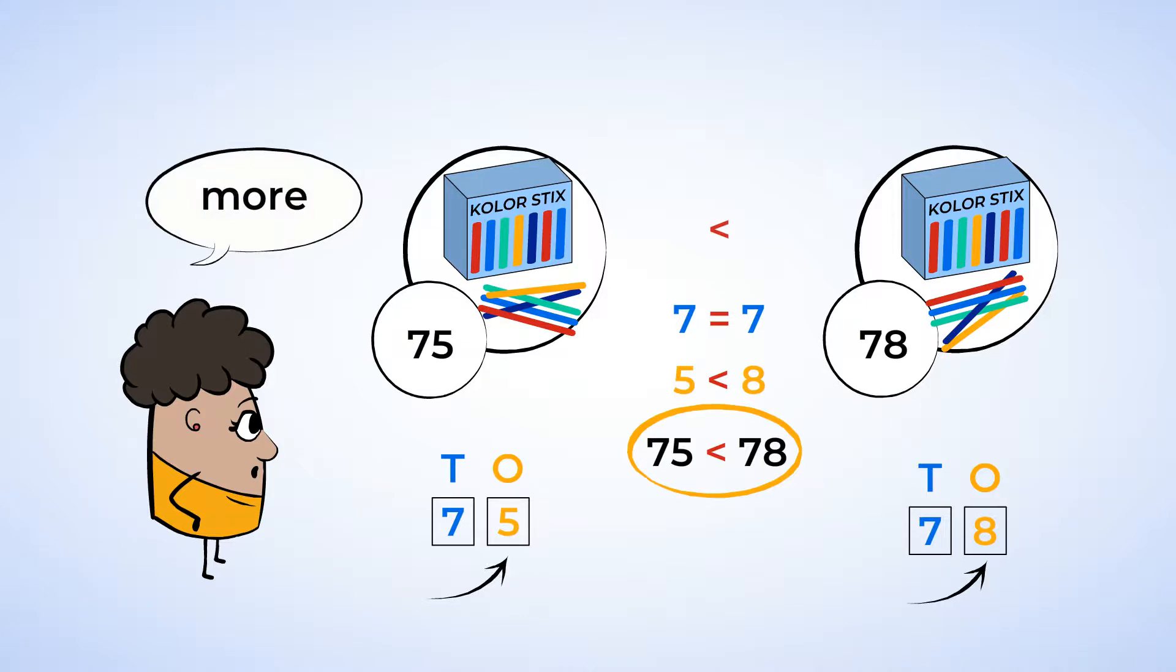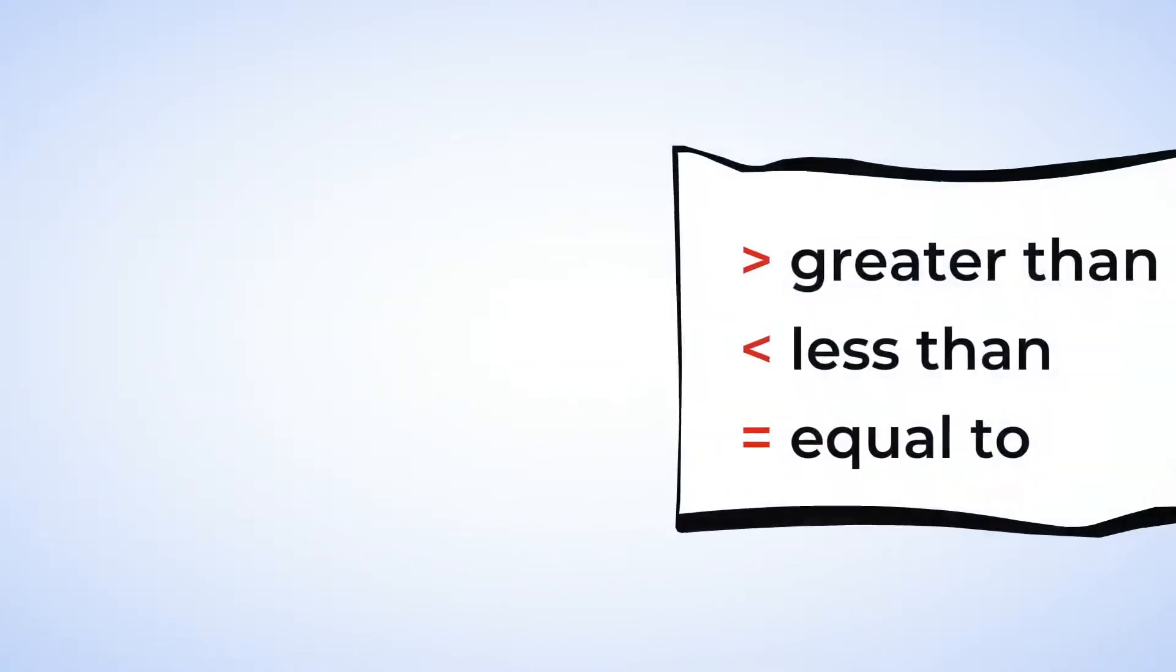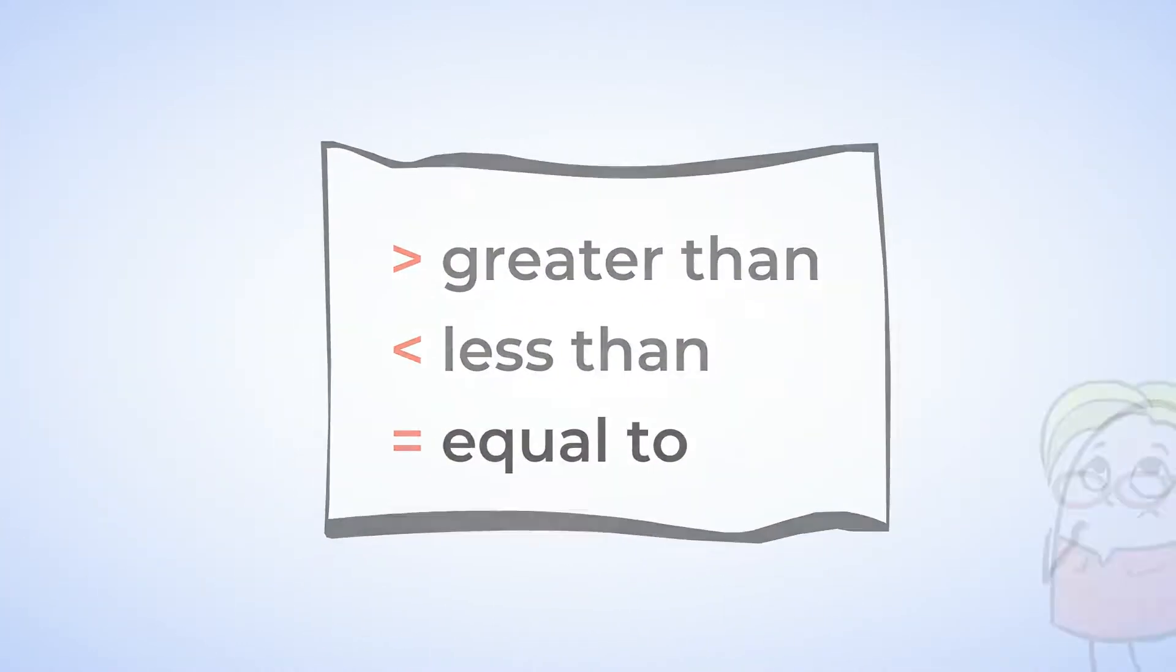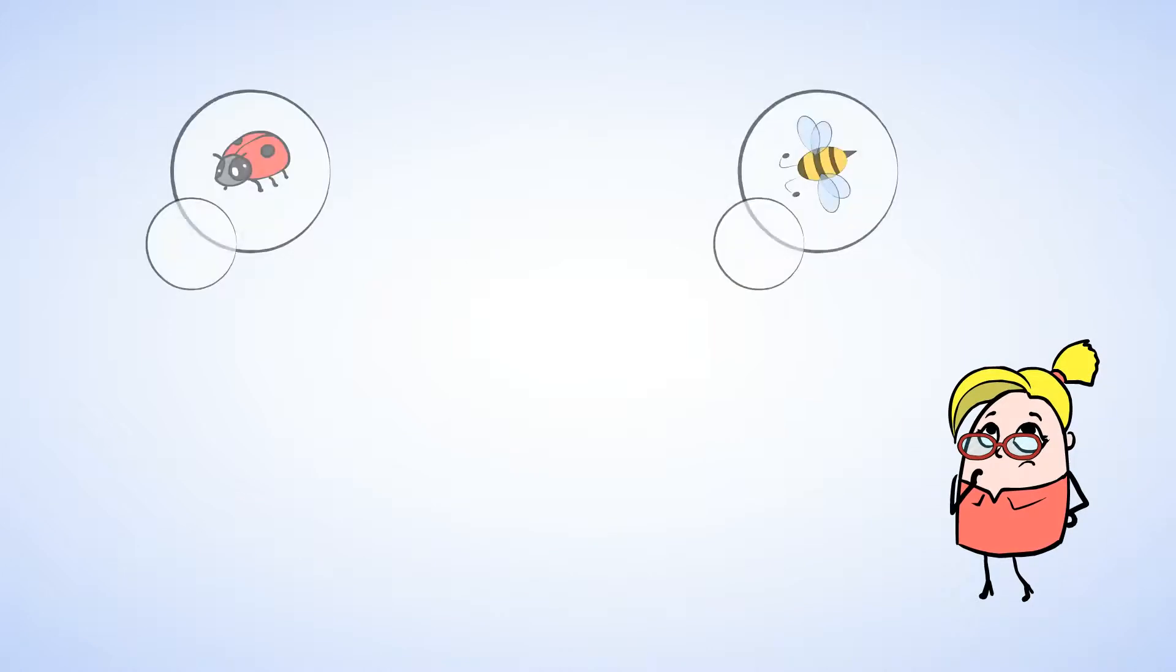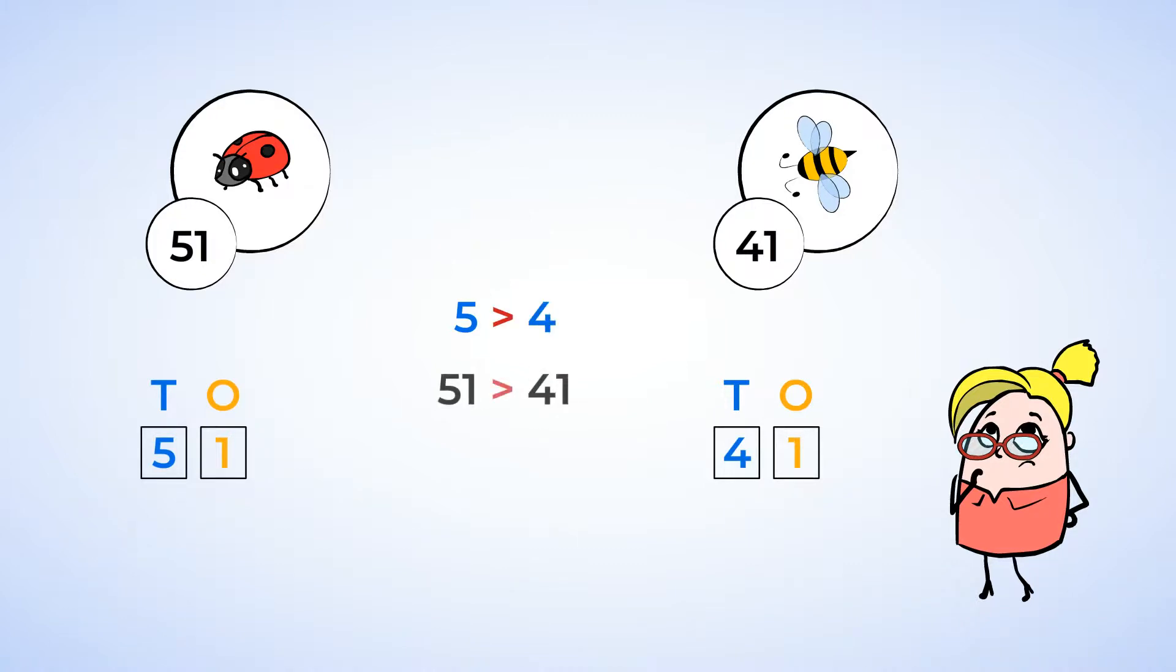But let's make sure we really got the hang of this by comparing a few more numbers using these symbols. Look at these ladybugs and bees. We have 51 ladybugs and 41 bees. First, we're going to compare the tens. 5 tens is more than 4 tens, so we know that 51 is greater than 41, and we'll use the greater than symbol.